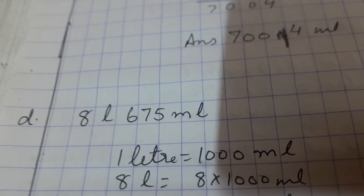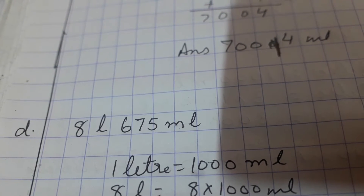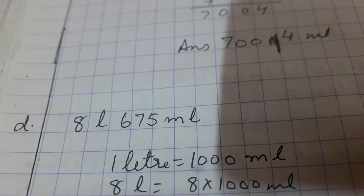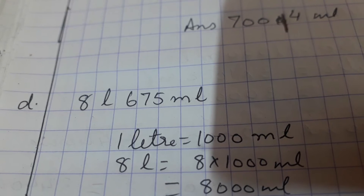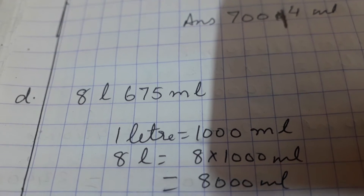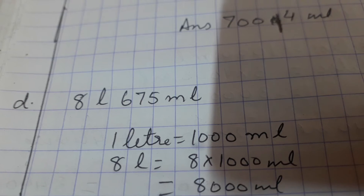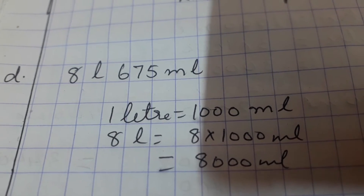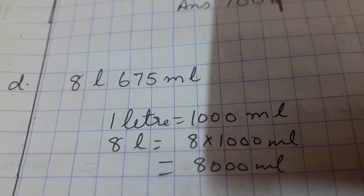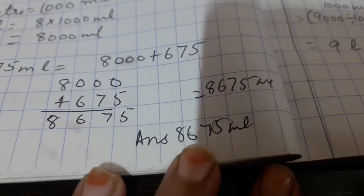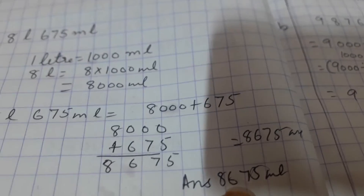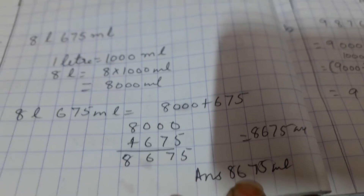The next question is eight liters, six hundred and seventy-five milliliters. One liter is equal to one thousand milliliters, so eight liters is equal to eight multiplied by one thousand, which is eight thousand milliliters. Then we add six hundred and seventy-five more milliliters, so eight thousand plus six hundred and seventy-five gives us eight thousand six hundred and seventy-five milliliters. This is how we convert liters into milliliters.